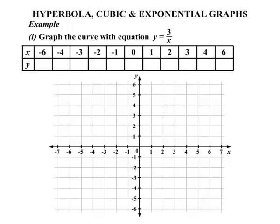Now when x is minus 6 we substitute in. We get 3 divided by minus 6, that's minus 0.5. When x is minus 4, 3 divided by minus 4 is minus 0.75. We substitute minus 3: 3 divided by minus 3 is minus 1. When x is minus 2, 3 divided by minus 2 is minus 1.5. We continue. Substitute x equal to minus 1, we get 3 divided by minus 1, that's minus 3.